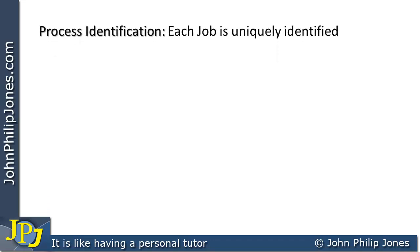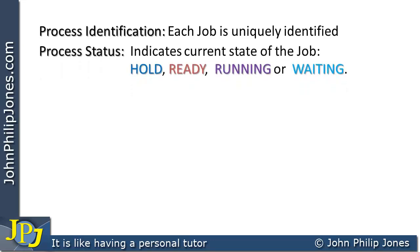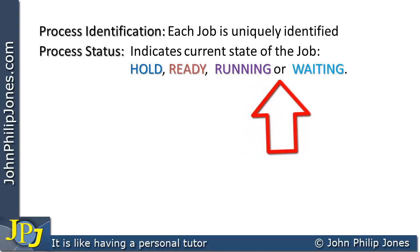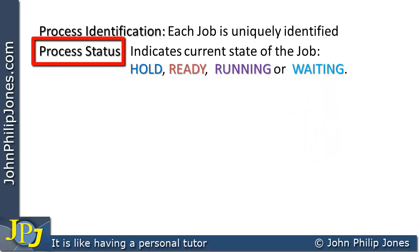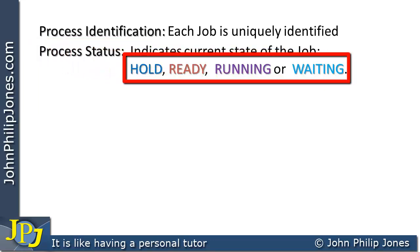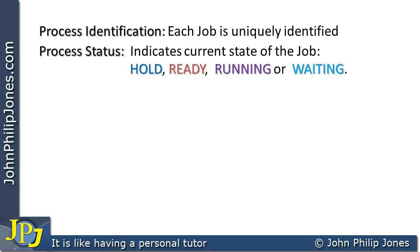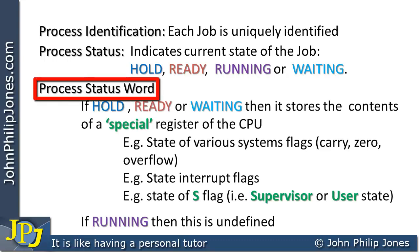Let's consider each field of the process control block. The first field is process identification — each job has a unique identifier, a unique code to distinguish it from other jobs. The next field is process status. Every process is going to be in a number of possible states during its lifetime: on hold, ready to run, running, and also a waiting state. This field holds an appropriate code to indicate whether the process is in the hold, ready, running, or waiting state.